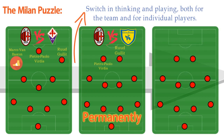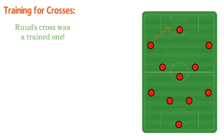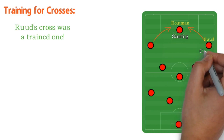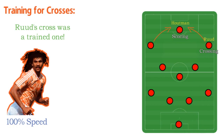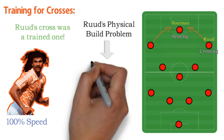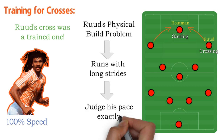Later, Ruud moved to the right of the midfield at AC Milan. Once again, he had to adapt. The advantage for him as a runner was that there was plenty of space to do his thing along the touchline. Ruud's cross was a trained one — it hadn't come naturally. At Feyenoord, he had practiced crossing continually, because it's a key weapon in a 4-3-3 arsenal. He practiced crossing always at full speed, the full 100%, while most players normally train at about 60%. Ruud's physical build posed a problem — he runs with long strides, and that meant it was essential to judge his pace exactly.